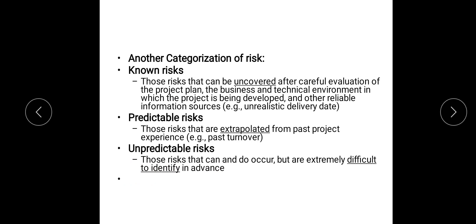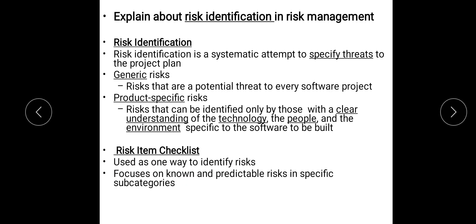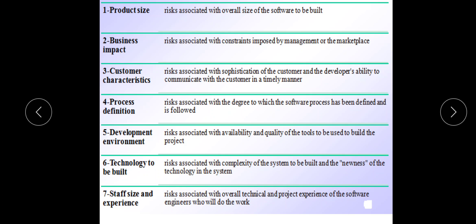Sales and Management risks. There is another category: predictable risks and unpredictable risks. We also discussed Risk Identification — how we would systematically identify the threats that would occur — covering generic and product-specific risks. Then we have a Risk Item Checklist to check whether all risks are considered, with a table covering risks regarding project or product size, business impact, customer characteristics, and so on.